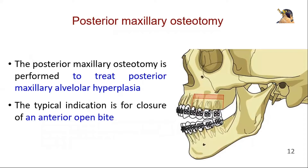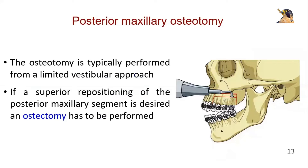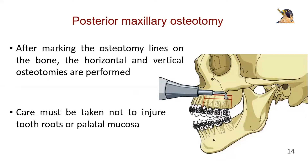Now, the posterior maxillary osteotomy. The posterior maxillary osteotomy is performed to treat posterior maxillary alveolar hyperplasia. The typical indication is for closure of an anterior open bite. The osteotomy is typically performed from a limited vestibular approach. If a superior repositioning of the posterior maxillary segment is desired, an ostectomy has to be performed. After marking the osteotomy lines on the bone, the horizontal and vertical osteotomies are performed.